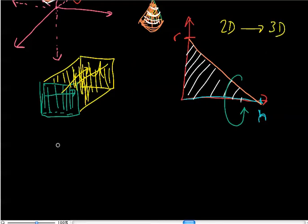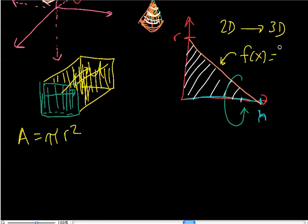So I'm taking a 2D object, and I'm turning it into 3D by rotating it around the axis. The only thing I need to know is the area of a circle formula, which is pi r squared. Now, my question is, in order to integrate, I need to know the function of this line. I need to know what this is. So how do I do that?